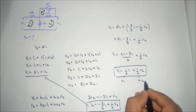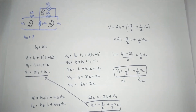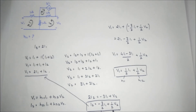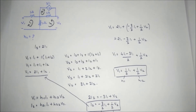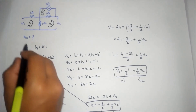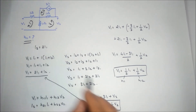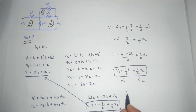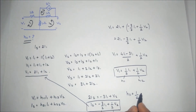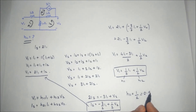So the final equation is V1 equals (1/2)I1 plus (1/2)V2. Comparing with the H-parameter formula, the coefficient of I1 gives H11 equals 1/2, which is equal to 0.5.